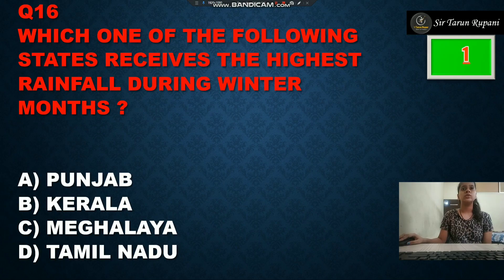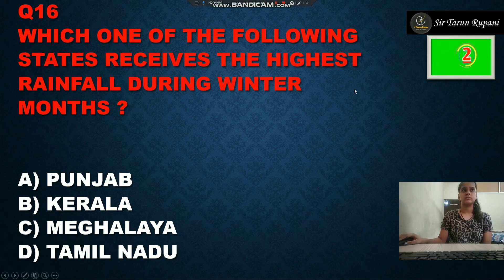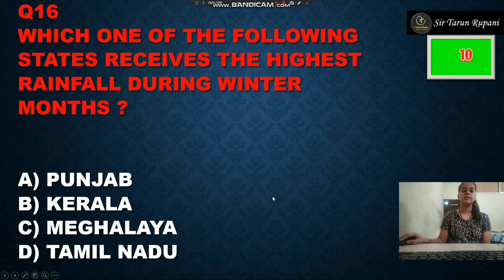Which one of the following states receives the highest rainfall during winter? Option A is Punjab, option B is Kerala, option C is Bengal, and option D is Tamil Nadu. The timer is up and our correct answer is Tamil Nadu, option number D.